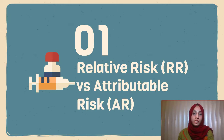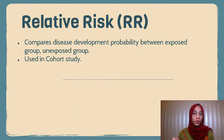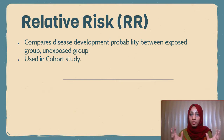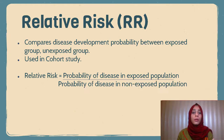We are going to talk about relative risk and attributable risk. Relative risk compares disease development probability between the exposed group and the unexposed group. It is used in cohort study. In cohort study, we had exposure to the risk factor, and now we compare the two probabilities of disease development in those two groups. Relative risk is defined as the probability of disease in the exposed population divided by the probability of disease in the non-exposed population.